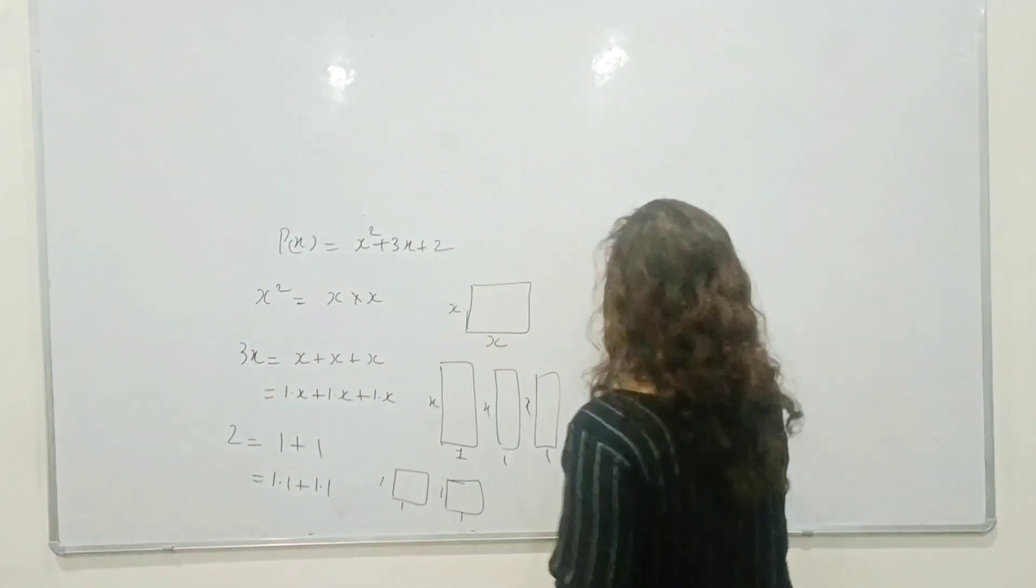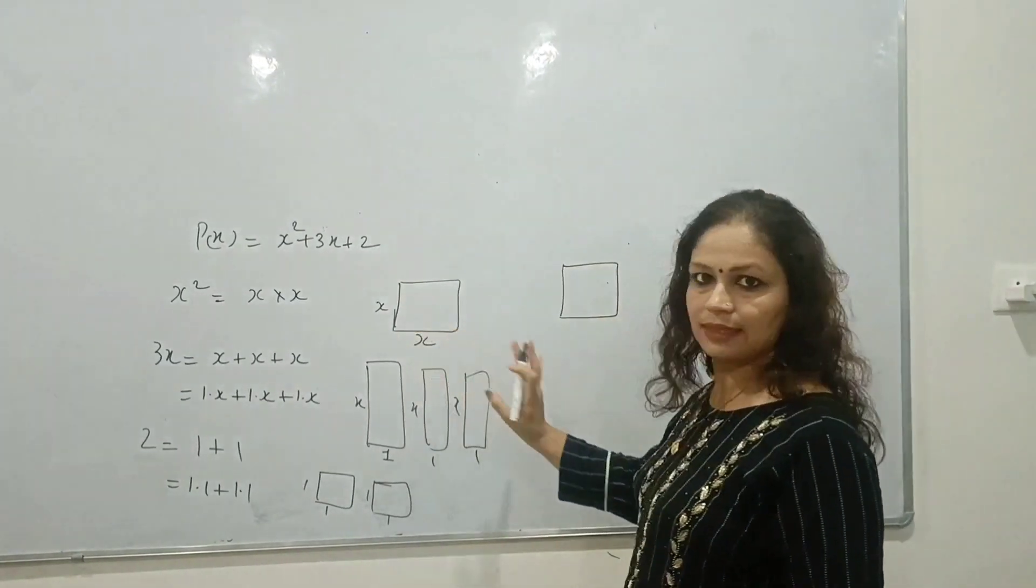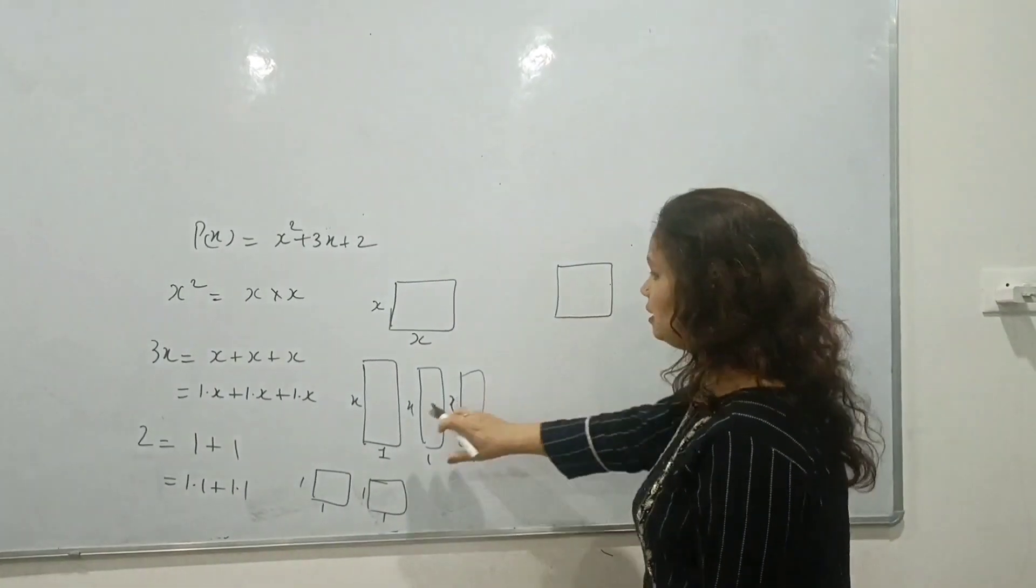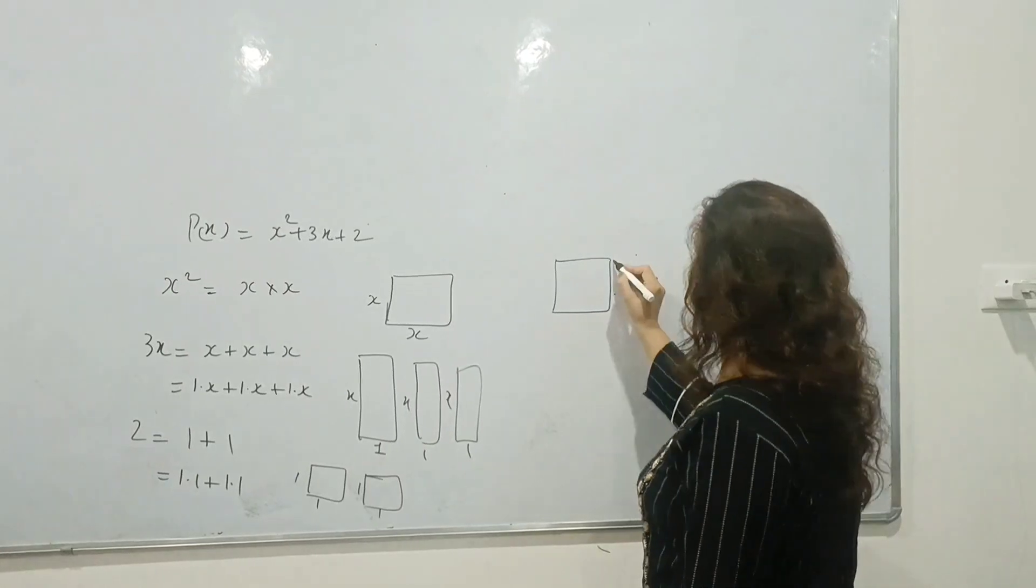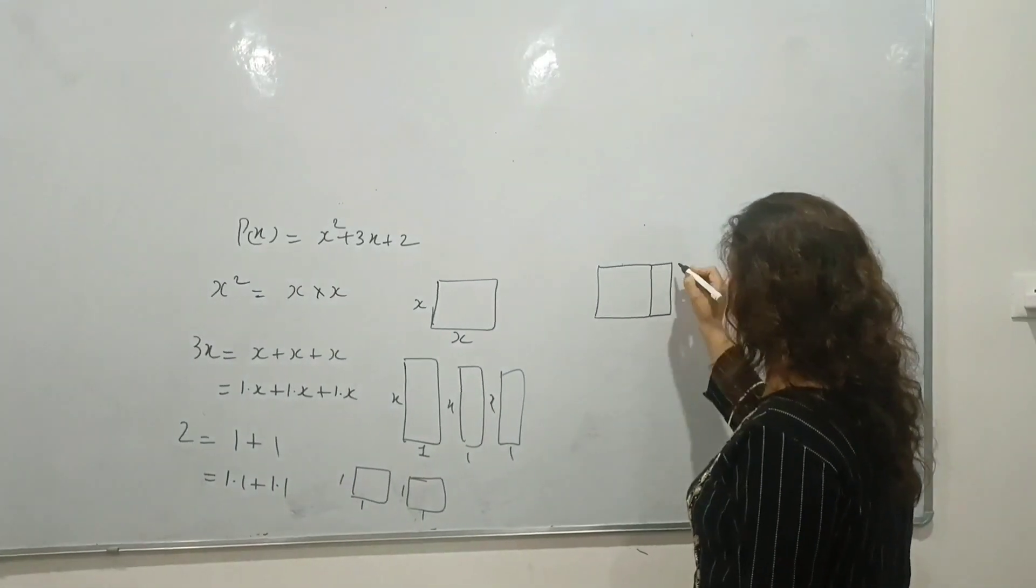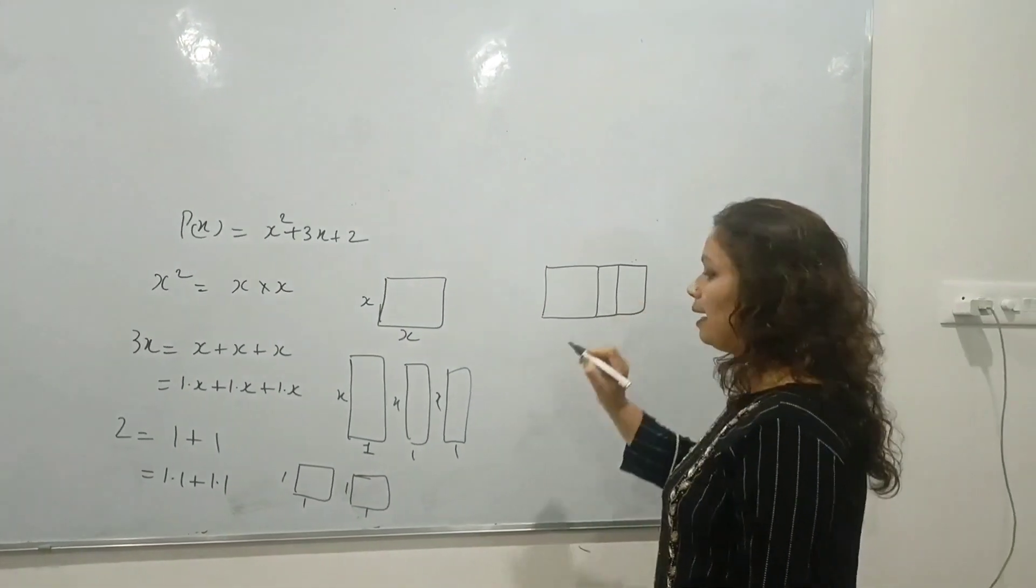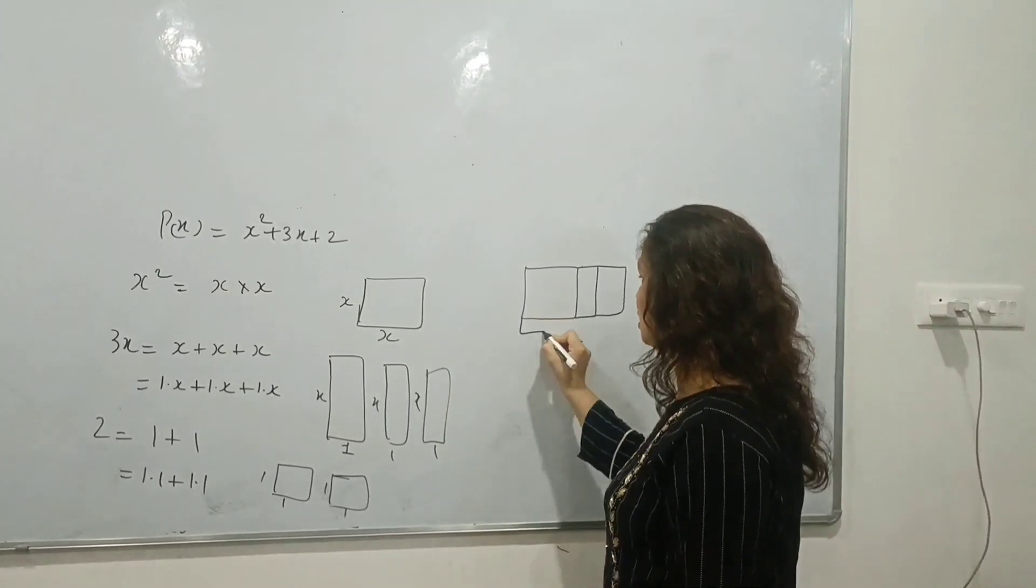First of all, we will draw our square whose side is x and x. Then we will draw these three rectangles. The first rectangle is here, the second one after this, and the third one is below this square.